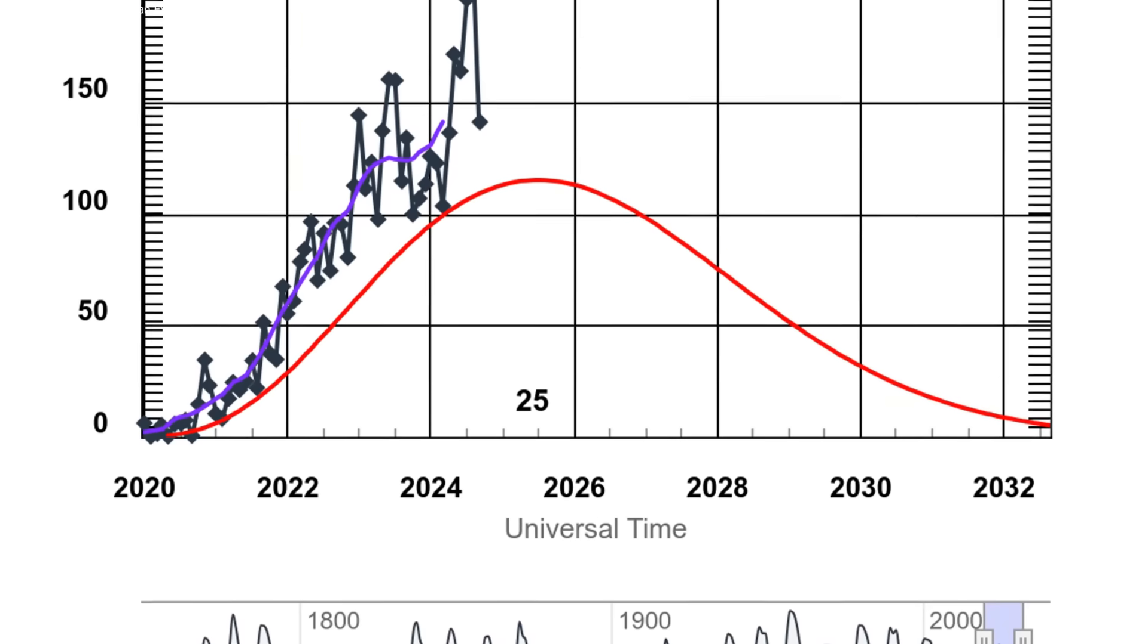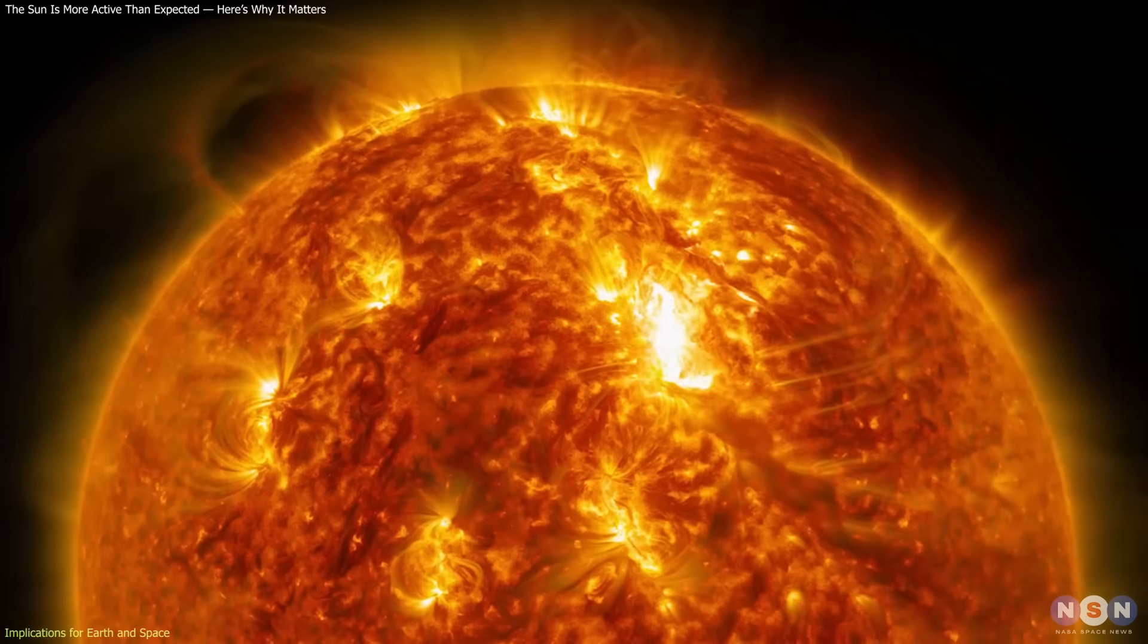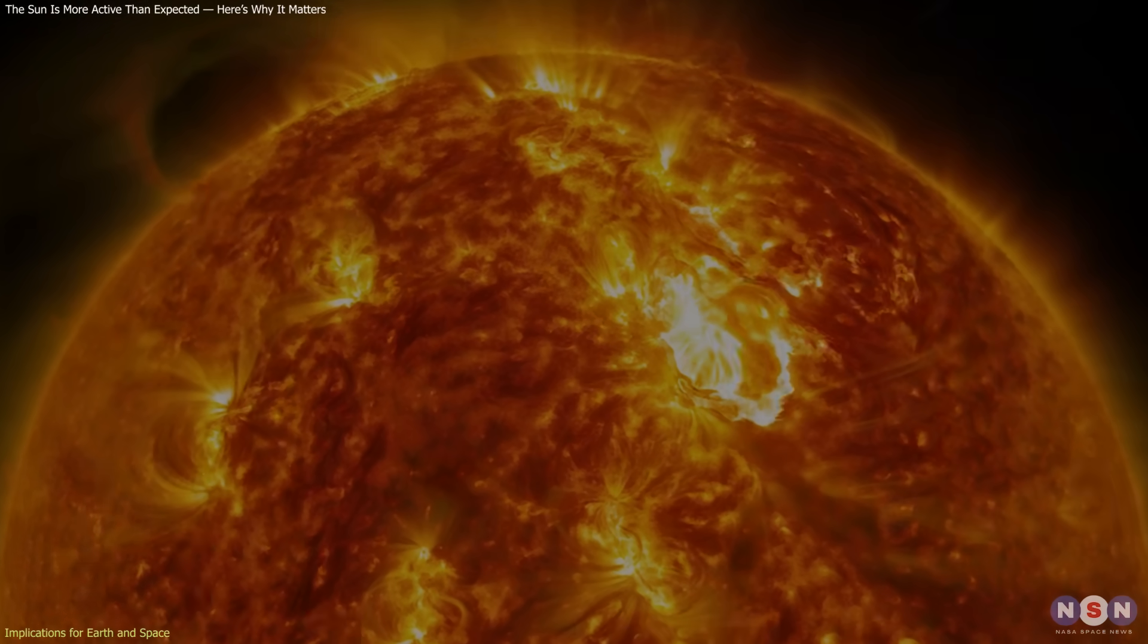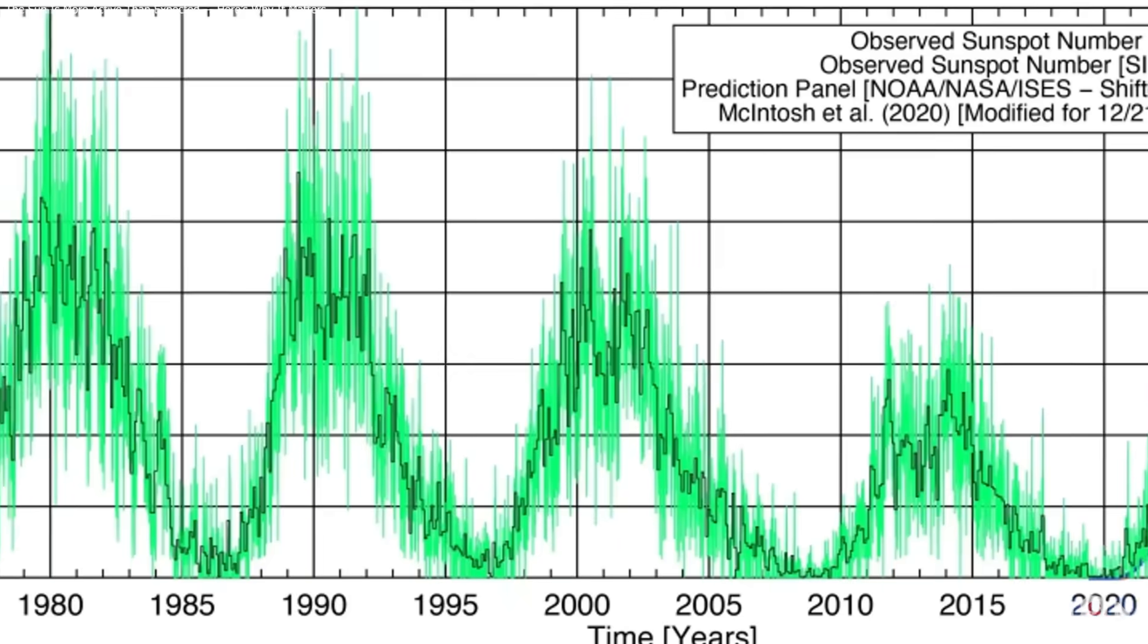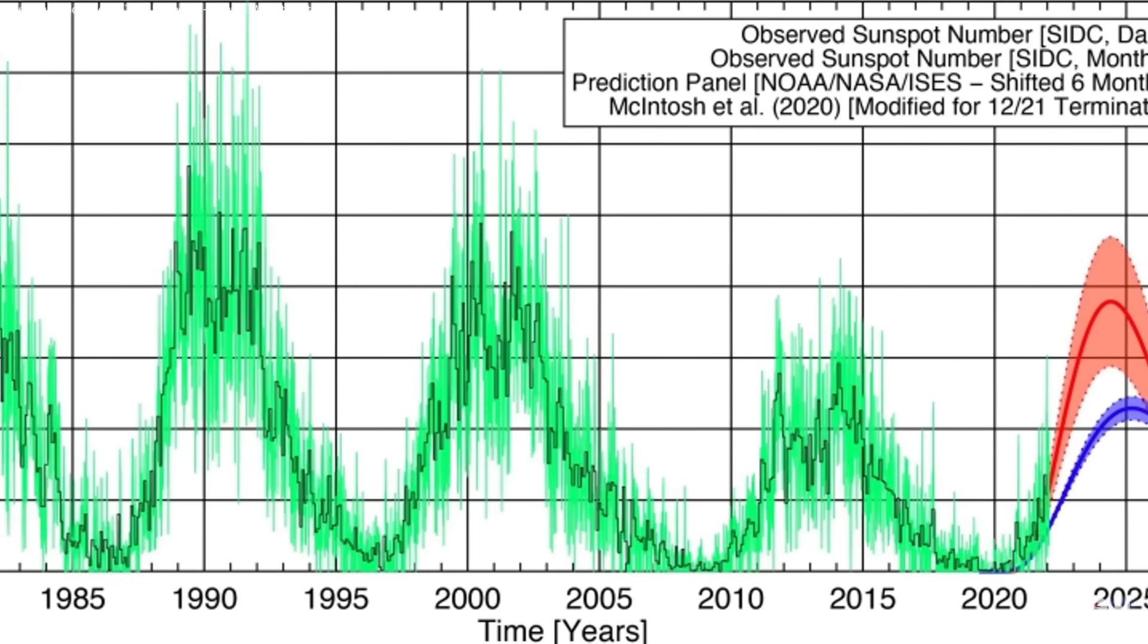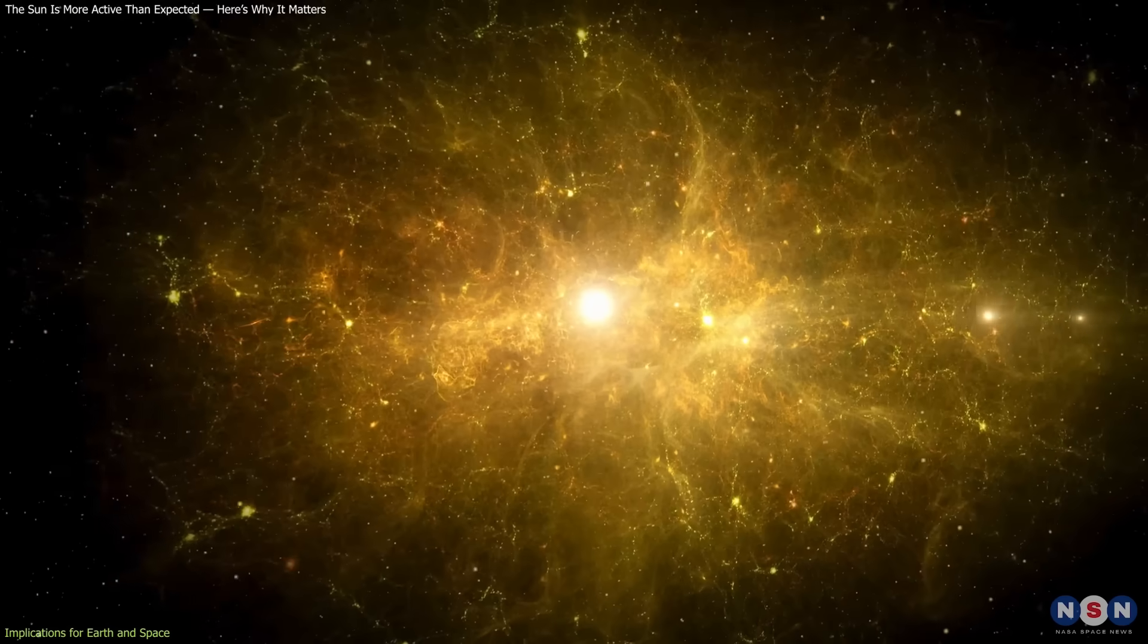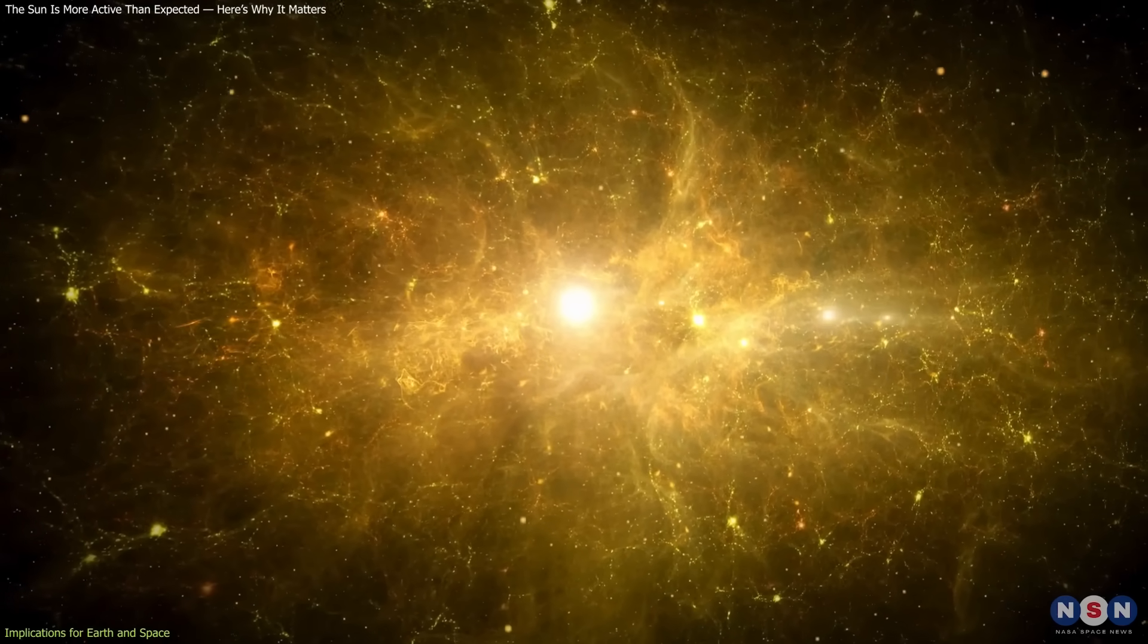The key question is whether this upward trend will continue or stabilize. So far, solar wind strength remains below levels recorded in the early 20th century. That suggests we are not yet in unprecedented territory. Still, the mismatch between forecasts and reality is enough to keep scientists cautious. The lesson is clear. The sun is unpredictable, and we must be ready for its surprises.